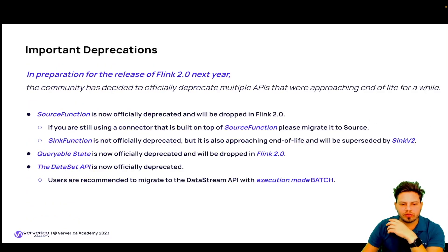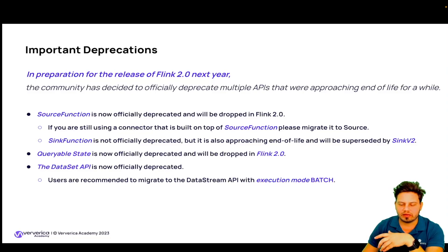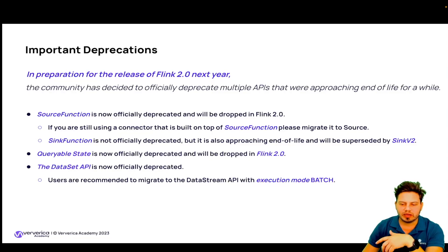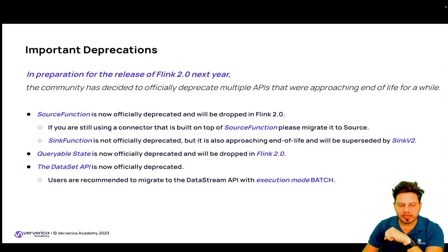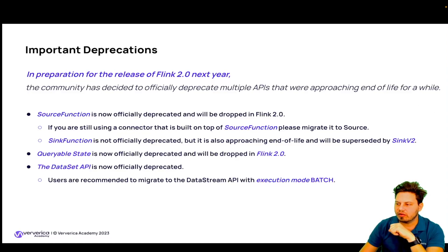Finally, in preparation for Flink 2.0, the community has decided to officially deprecate multiple APIs approaching the end of their lifecycle. The SourceFunction is officially deprecated and will be dropped in Flink 2.0 — connectors built on top of it should migrate to the Source API. The SinkFunction, although not officially deprecated, is approaching end-of-life and should be replaced by Sink v2. The queryable state and the DataSet API are also officially deprecated and will be dropped in Flink 2.0.